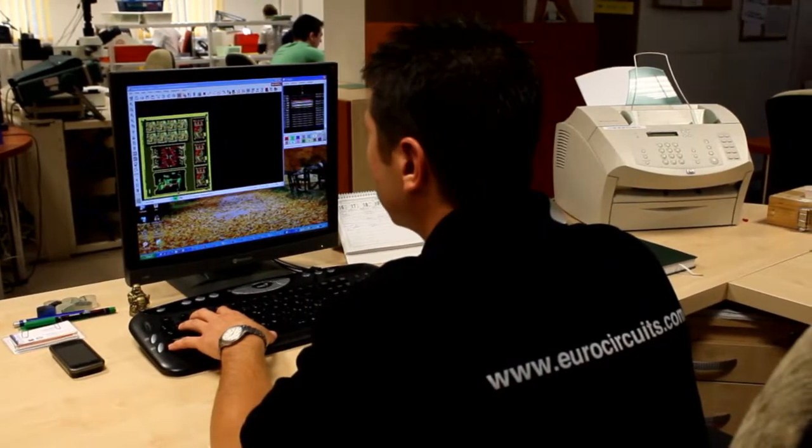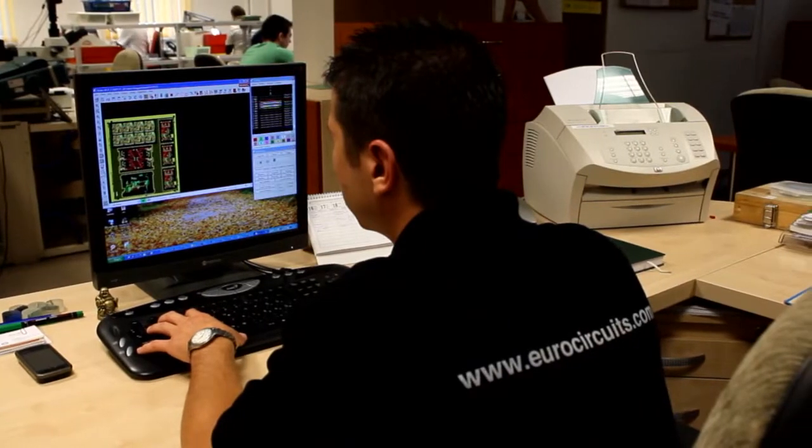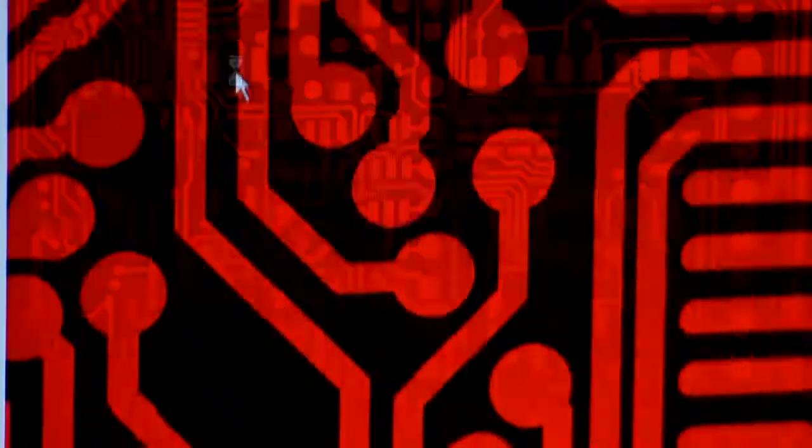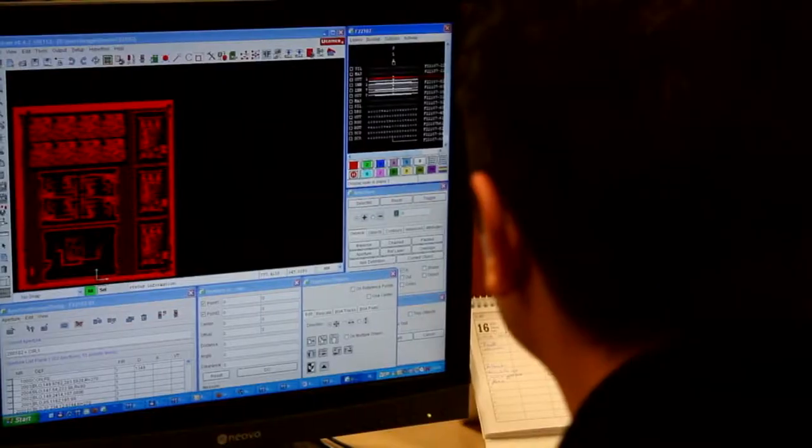This is Extended Gerber, or RS274X. The Gerber files define the copper tracking layers, four in the job we are following, as well as the solder masks and component notations.